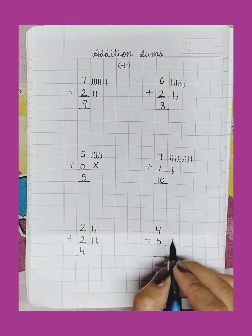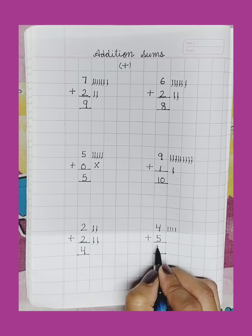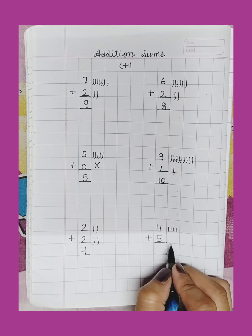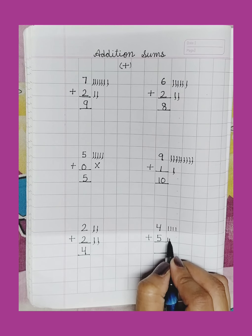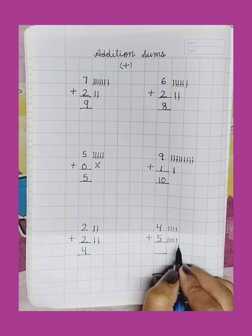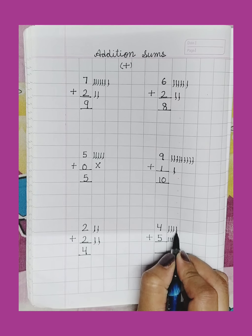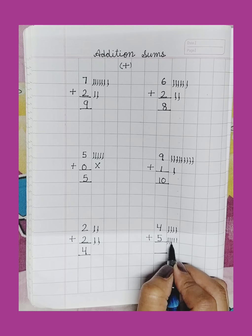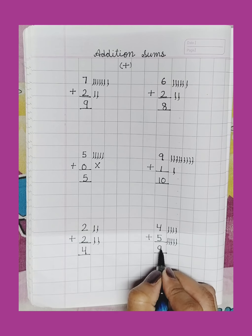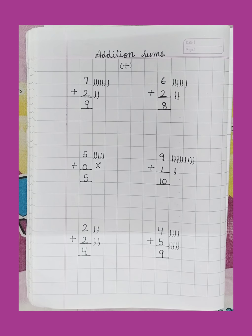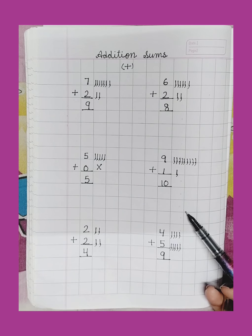Number 4. Draw 4 lines: 1, 2, 3, 4. Number 5. Draw 5 more lines: 1, 2, 3, 4, 5. Count the lines: 1, 2, 3, 4, 5, 6, 7, 8, 9. Write here 9. Students, you will practice it in your maths notebook.